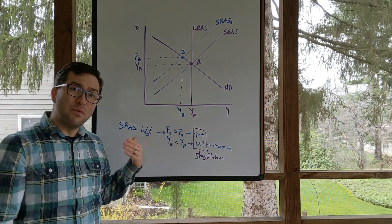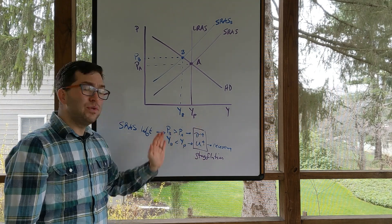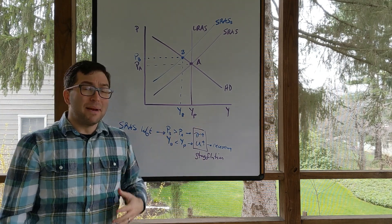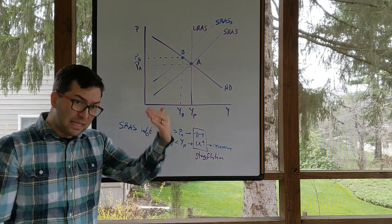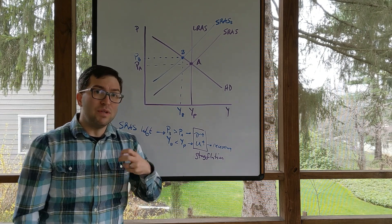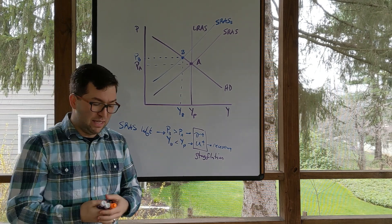If you refer back to the aggregate demand recession, yes, we had people losing their jobs, we saw unemployment going up, but at least prices were coming down, or at least staying relatively stable, so you didn't get hit twice. Here, the economy is getting hit twice.